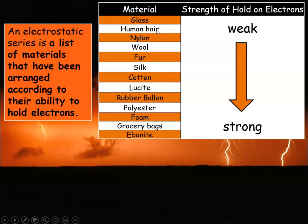Going back to human hair and a rubber balloon: the rubber balloon has a strong hold on electrons, and human hair has a weaker hold. The rubber balloon is going to take the electrons and become negatively charged, while your hair gives them up and becomes positively charged. So your hair is positive and the balloon is negatively charged.